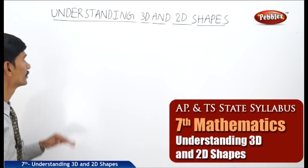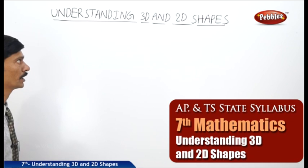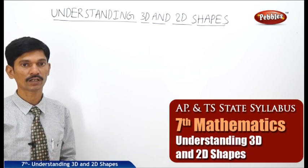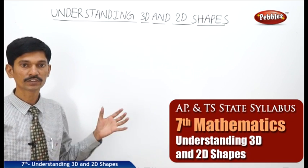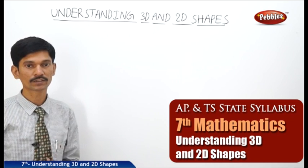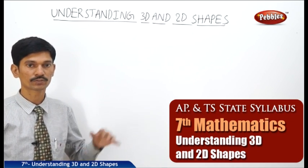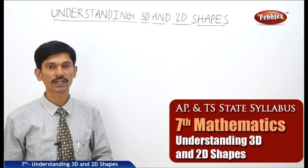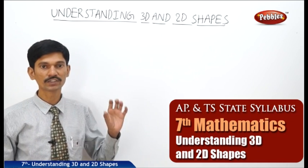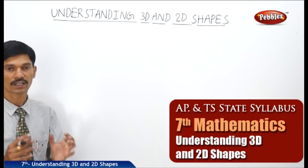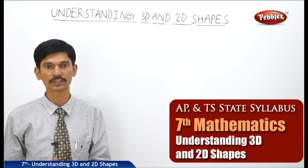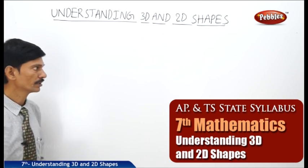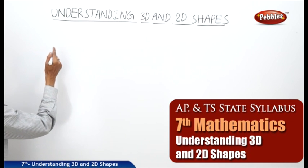Now let us learn the next chapter: understanding 3D and 2D shapes. If you observe any plain paper or any square sheet, these objects have only two dimensions such as length and breadth, so these shapes are called 2D shapes. If you observe a brick or any dice, these objects have three dimensions such as length, breadth, and height, so these are called 3D shapes. Now let us write the definitions of 2D shapes and 3D shapes.